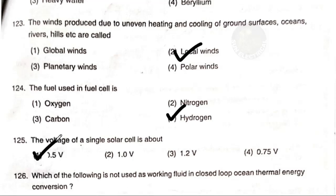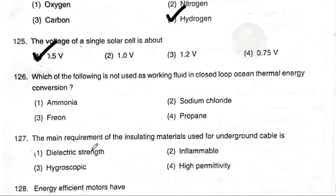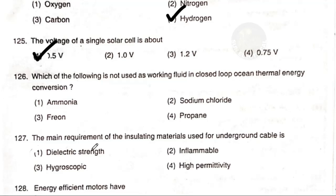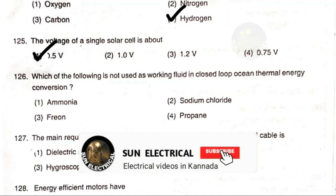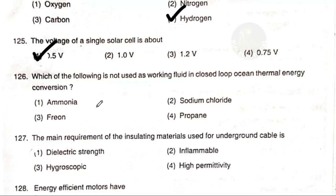Which of the following is not used as a working fluid in a closed-loop ocean thermal energy conversion (OTEC) system? Option 1 ammonia, option 2 sodium chloride, option 3 Freon, option 4 propane. The answer is option 2 — sodium chloride, as it is not used in OTEC systems.